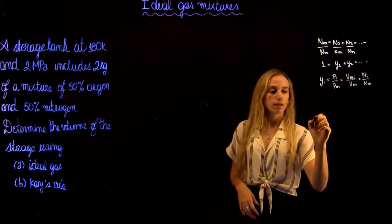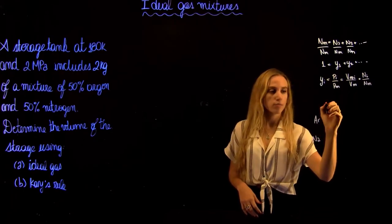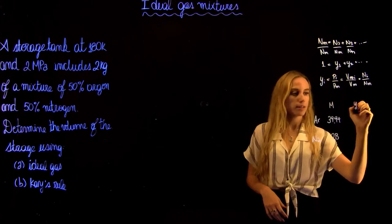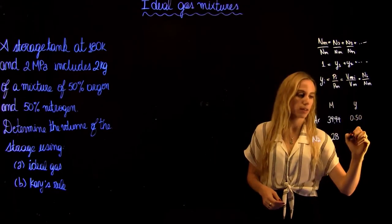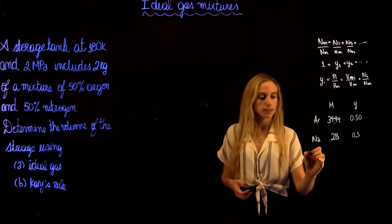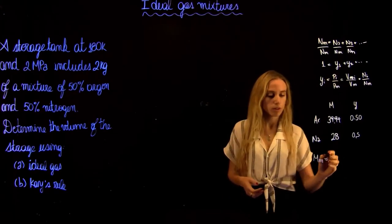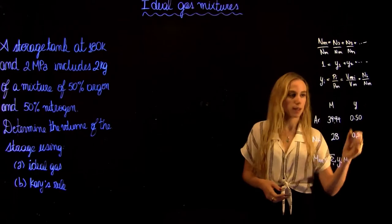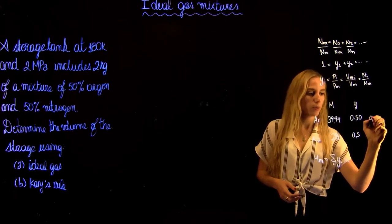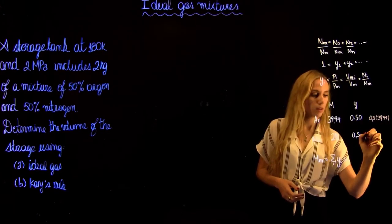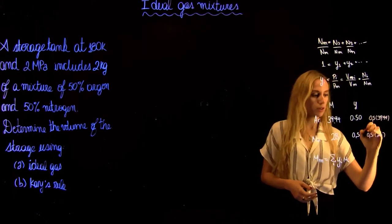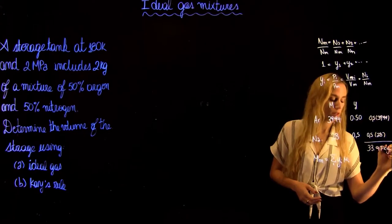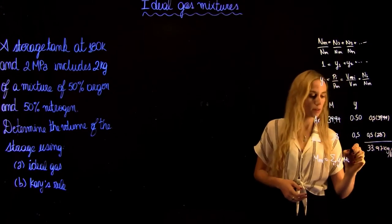Now in our problem we have argon and nitrogen. The molar mass of argon is 39.94 kg/kmol and for nitrogen it's 28 kg/kmol. The mole fraction is given as 50% each, so 0.5, in our case. To find the molar mass of the mixture, we sum the mole fraction of each compound times its molar mass: 0.5 times 39.94 plus 0.5 times 28, which gives us 33.97 kg/kmol — the molar mass of our mixture.